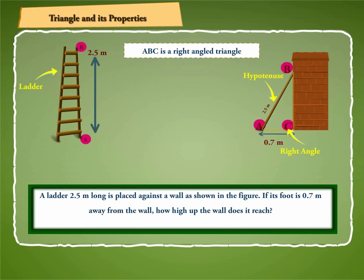and AB is hypotenuse. So, by Pythagoras theorem, AC square plus BC square is equal to AB square, or 0.7 square plus BC square is equal to 2.5 square,